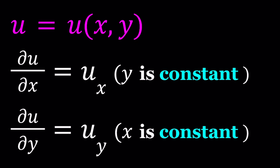U is a function of x and y, and we define the partial derivative of u with respect to x. We write it as u sub x, which is the notation we're going to use, in which y is constant. So when we talk about the partial derivative of u with respect to x, y will be considered a constant. And then the partial derivative with respect to y is u sub y, and in that case x is going to be a constant.